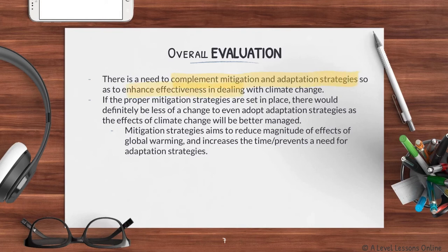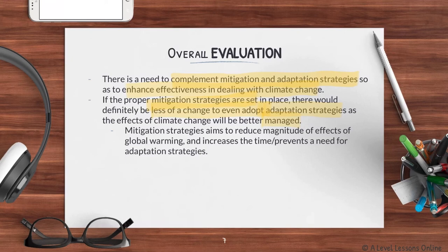The overall evaluation is that you need to complement mitigation and adaptation strategies to enhance effectiveness in dealing with climate change. Always go for a two-pronged approach: mitigation allows you to first prevent possible effects of climate change, and adaptation allows you to handle effects that have already happened when mitigation fails. If strong mitigation strategies are in place, there will be less need to adopt adaptation strategies. For example, if a river already has upstream flood controls, you may not even need to adapt to it overflowing.